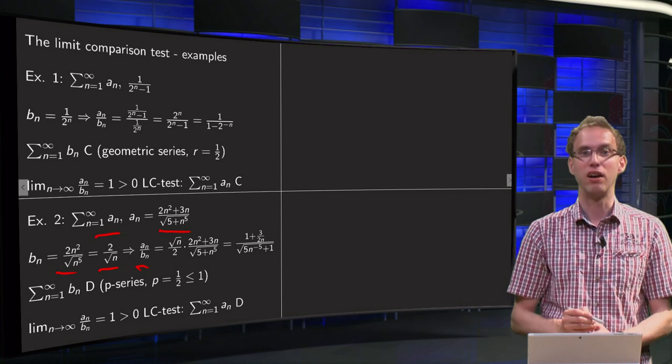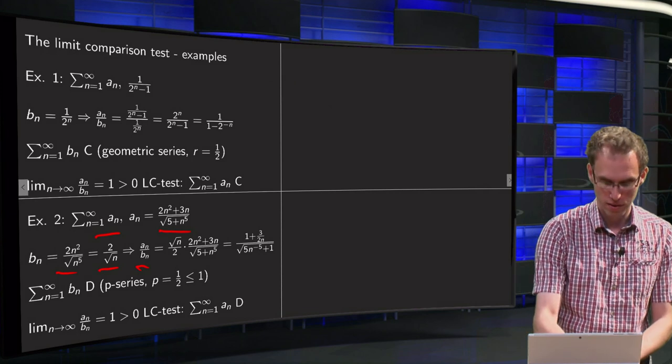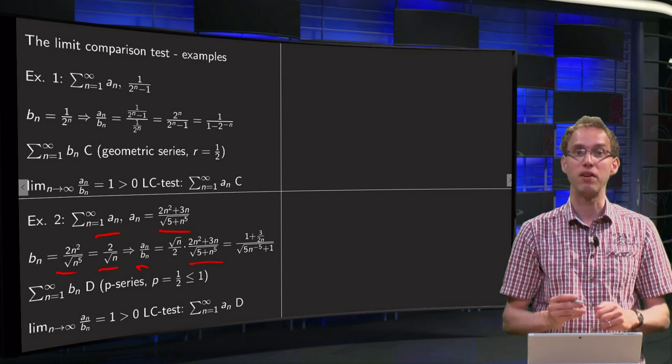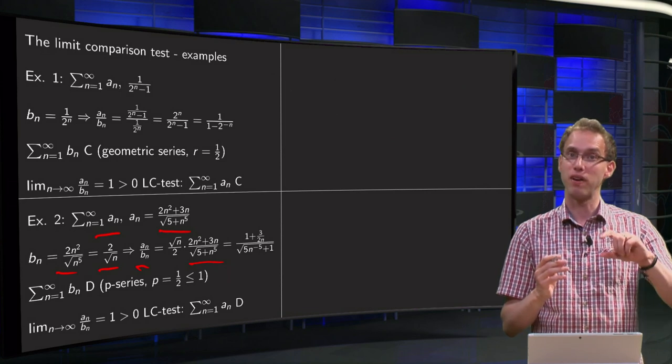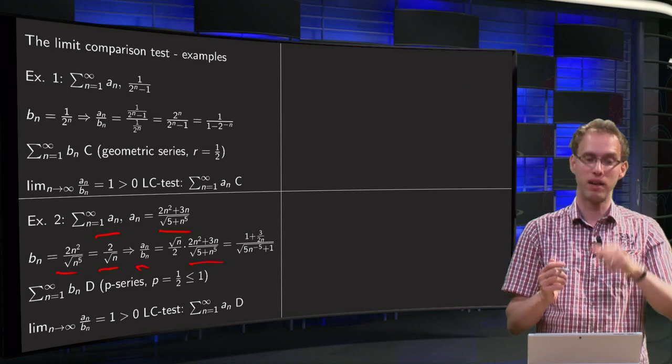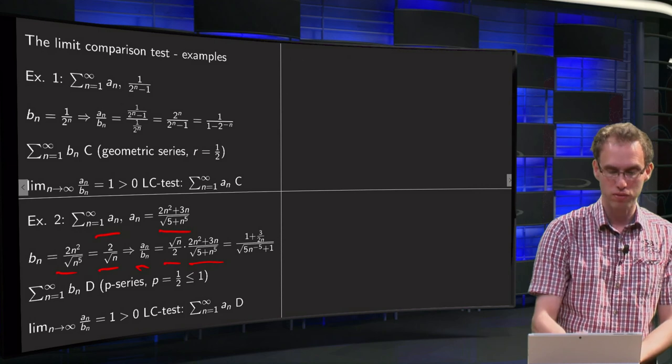First we compute an over bn. So here we have our horrible an, we have to divide by 2 divided by square root of n, so dividing by that means multiplying by the reverse: square root of n over 2.